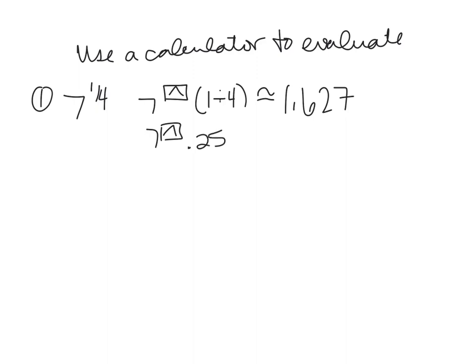You could also make that a decimal, so you go 7 to the 0.25. If you know the decimal right away, that helps as well.